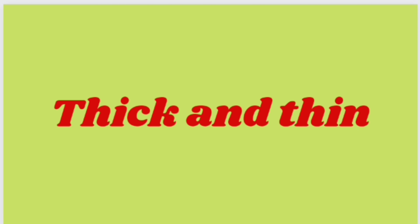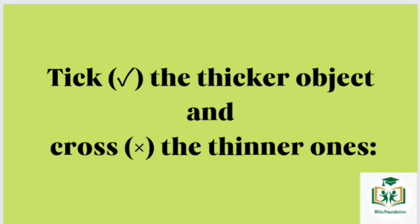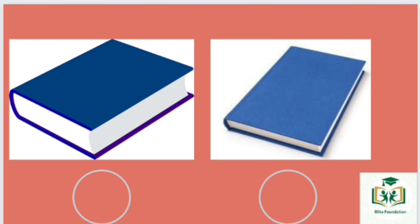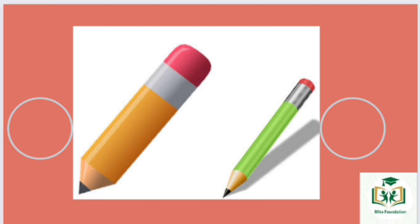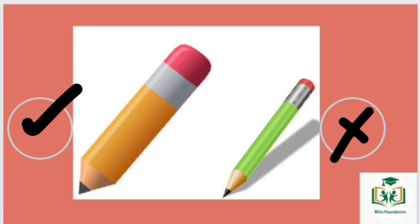Students, now we will do the comparison between thick and thin. Tick the thicker object and cross the thinner ones. Left pencil is the thicker one. Right pencil is the thinner one.